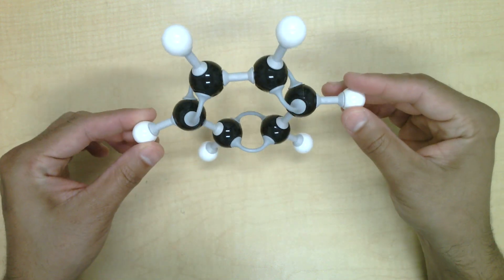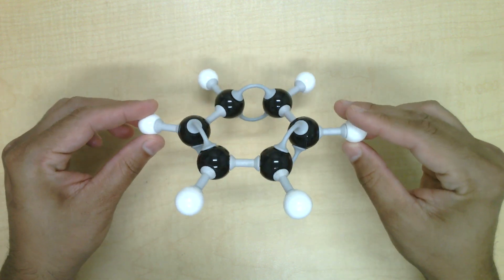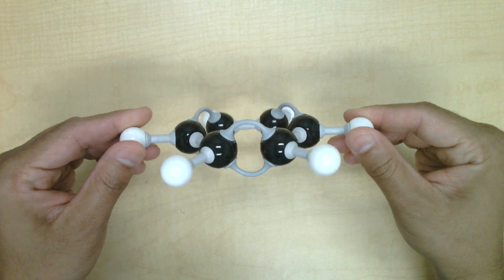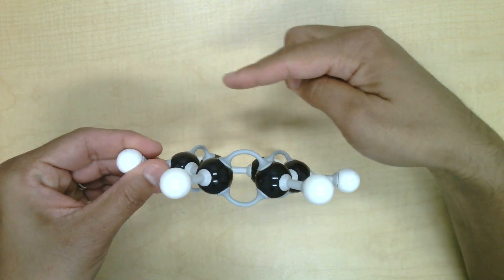Of course, the unhybridized p orbitals are perpendicular to the plane. It is in these orbitals that you'll find the pi bonds, or pi electrons. You can think of the pi electrons as around the top of the plane.